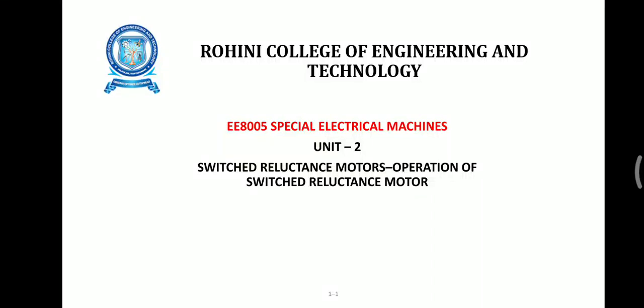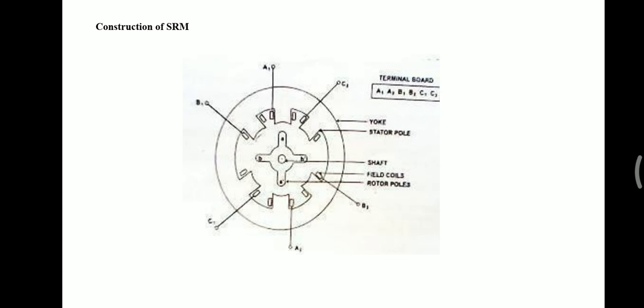Welcome to the course AE8005 special electrical machines, unit number 2: switch reluctance motor. In this section we will see the construction and operation of switch reluctance motor. At the end of this section one will be able to understand the construction of switch reluctance motor.